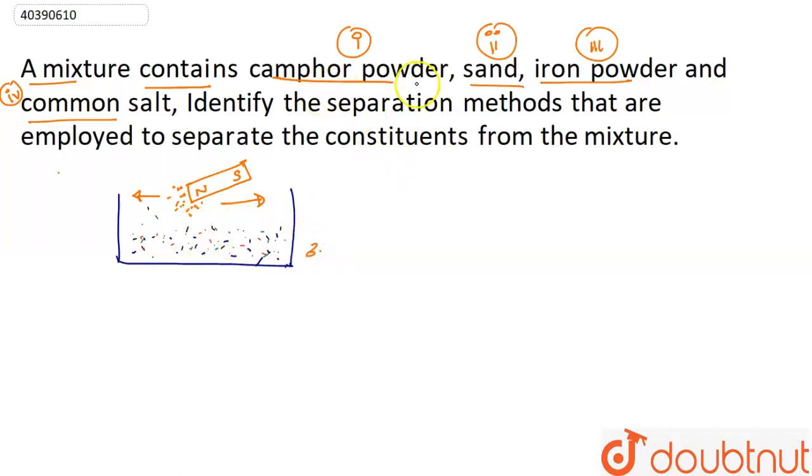So what are the 3 things? Camphor powder, sand, and common salt. Now what are we going to do? For camphor powder, we will simply use sublimation here. You should know about sublimation.